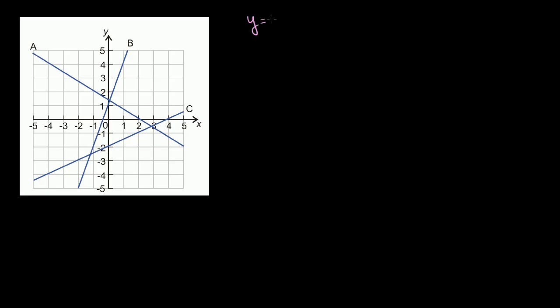Any linear equation can be written in the form y is equal to mx plus b, where m is the slope of the line — the same slope we've been dealing with the last few videos, the rise over run, or the inclination of the line. And b is the y-intercept.